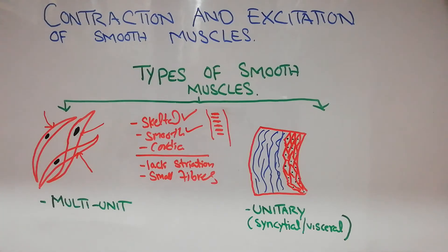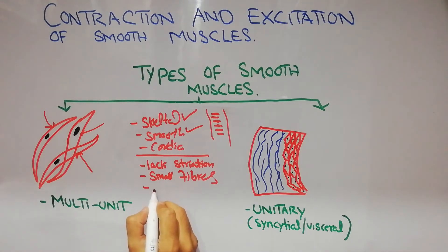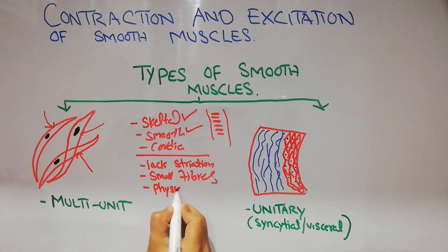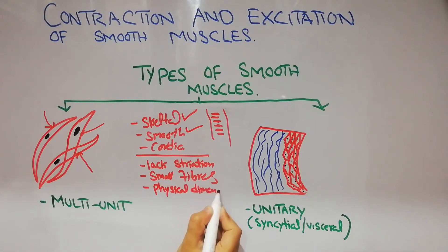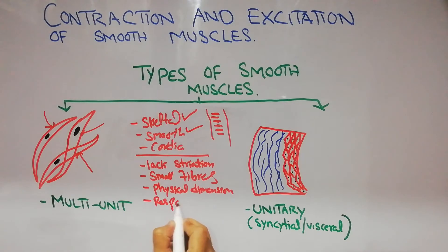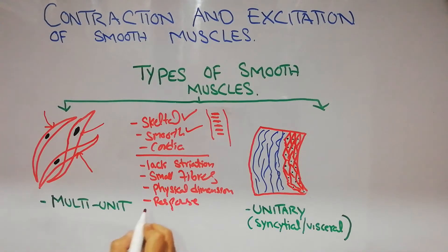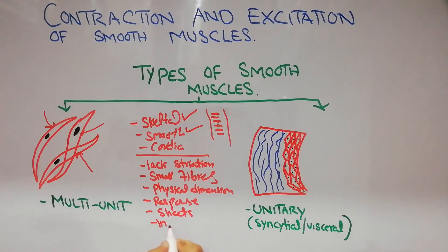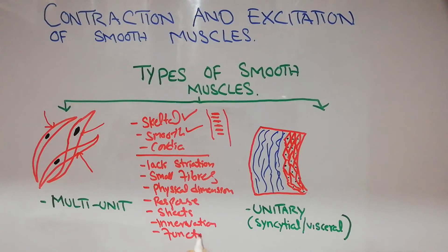Smooth muscles are of many types depending upon some qualities. They are basically classified according to different criteria: their physical dimensions — how they look and their appearance — their response to stimuli, the presence in sheets or not, their innervation — how they are innervated — and finally their function.